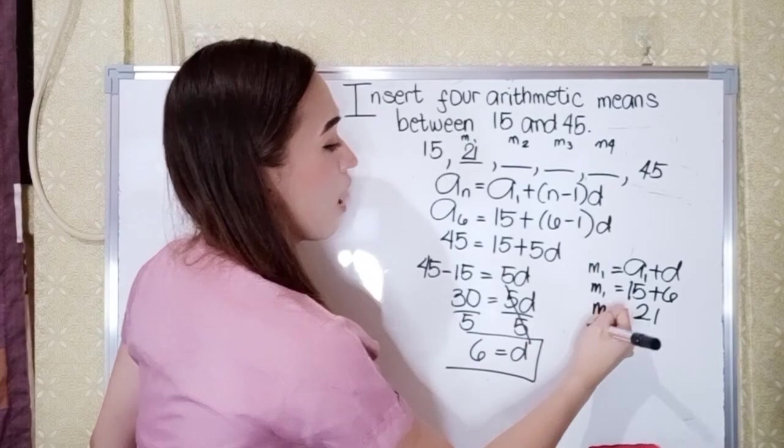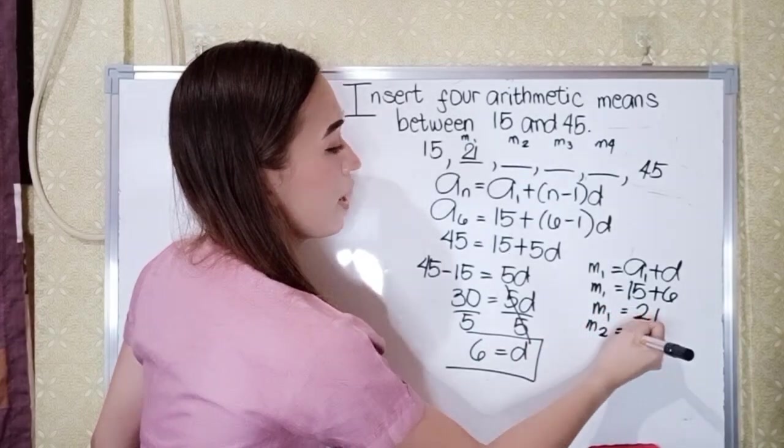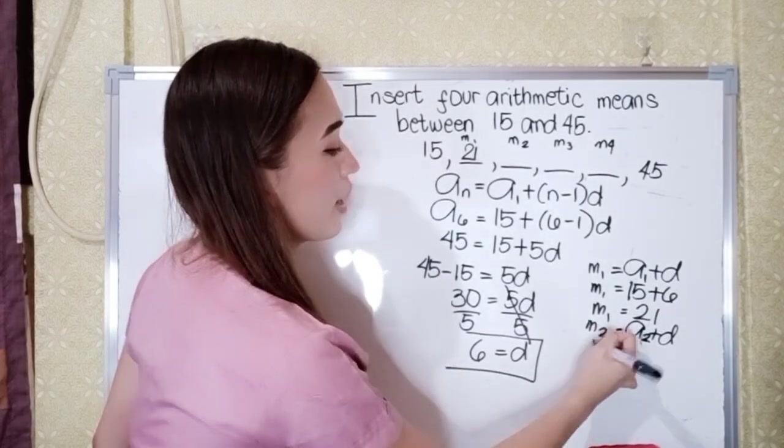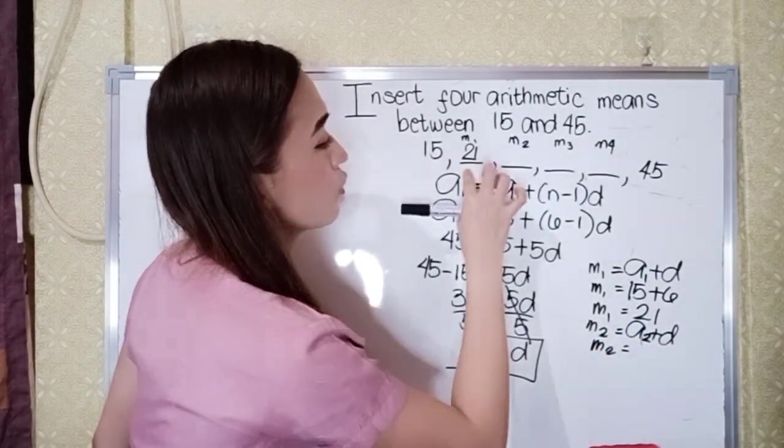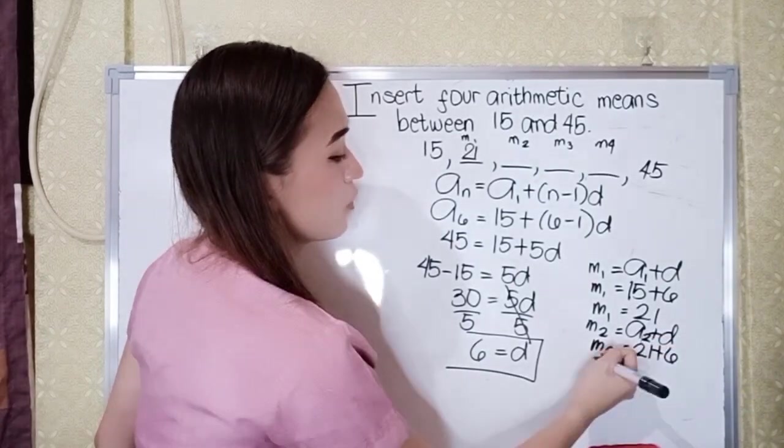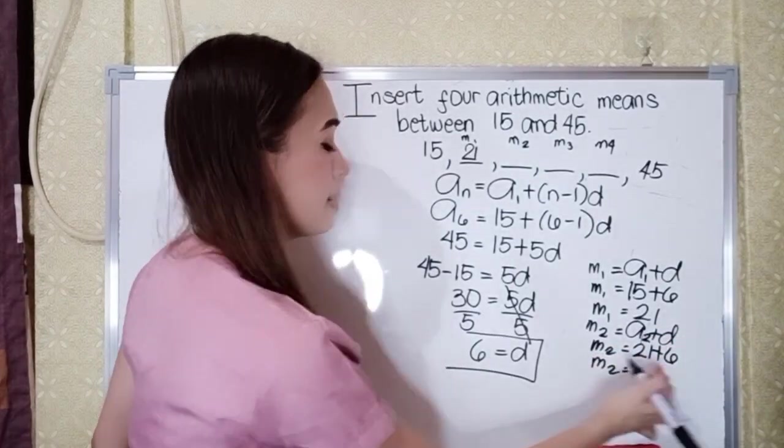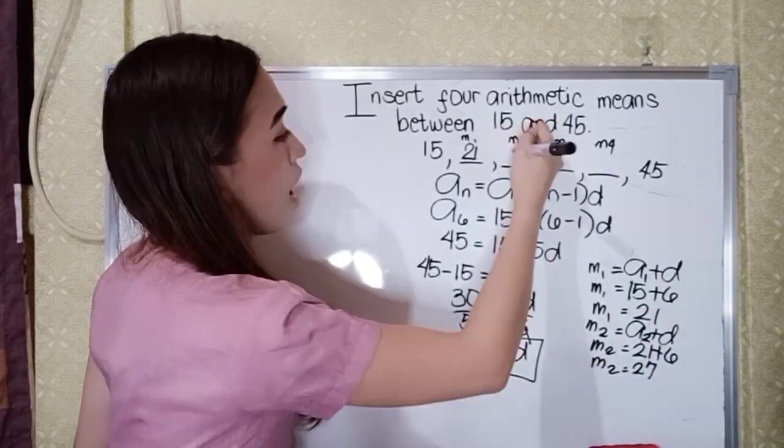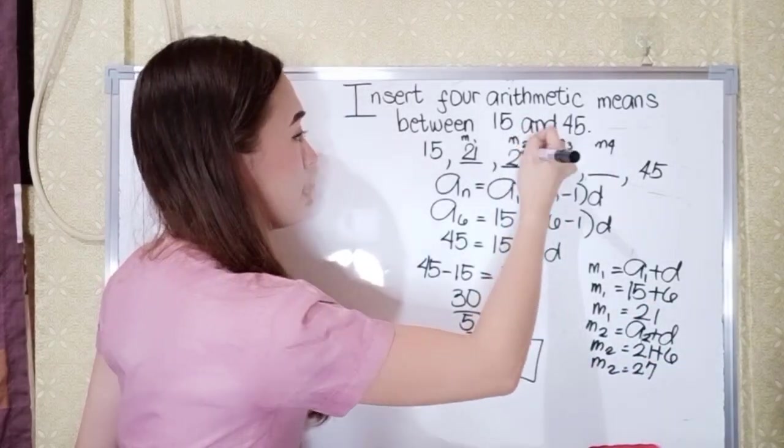Next, our mean sub 2. So A sub 2 plus D. So our A sub 2 is 21 plus 6. So 21 plus 6 is 27. So our mean sub 2 is 27.